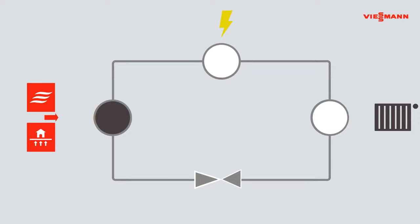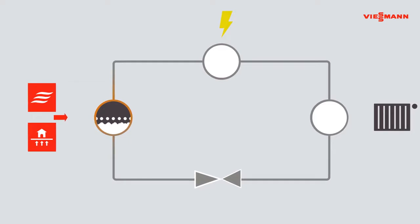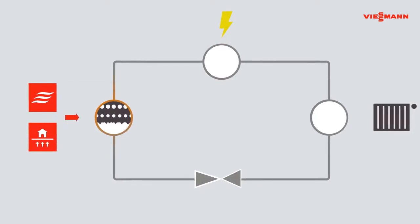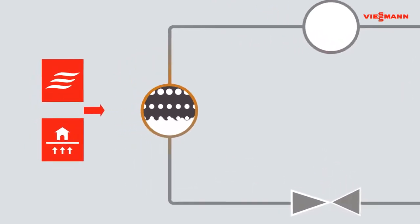The heat pump works with a refrigerant. This is a liquid that evaporates at a very low temperature. To generate heat for heating, the liquid refrigerant absorbs energy from the environment. Due to the ambient heat, the liquid refrigerant evaporates in the evaporator to refrigerant vapor.